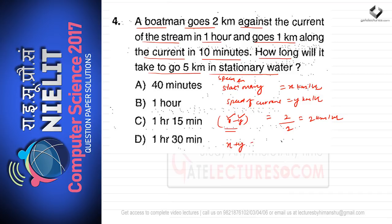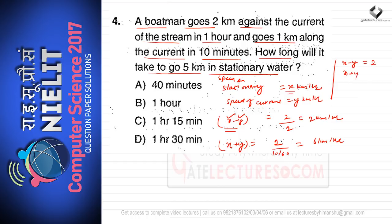The downstream speed x plus y: the boatman goes one kilometer along the current in 10 minutes, which is 1/6 hour, giving a downstream speed of six km/h. So x minus y equals 2 and x plus y equals 6. Adding gives 2x equals 8, so x equals four km/h — that is the speed in stationary water.